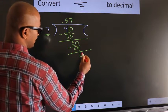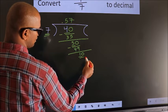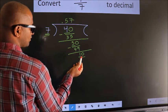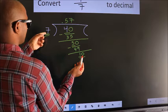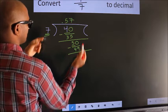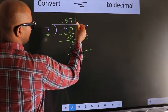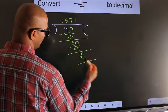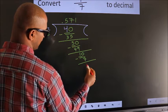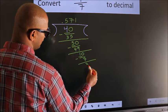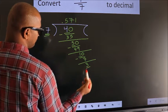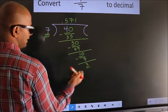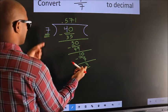We already have the decimal, so we can directly take 0, making it 10. A number close to 10 in the 7 times table is 7 ones, which is 7. Now we subtract and get 3. Here we have 3, and 3 is smaller than 7.